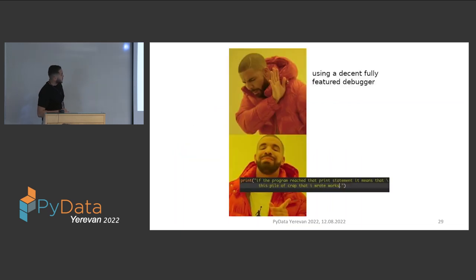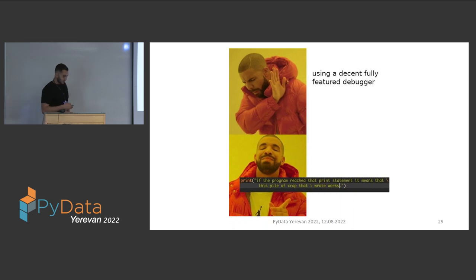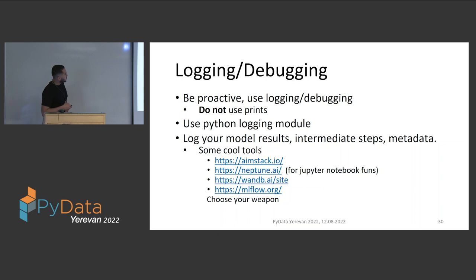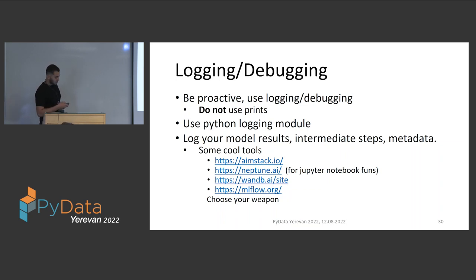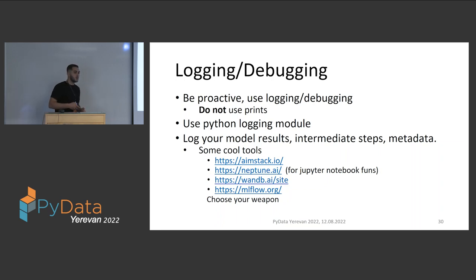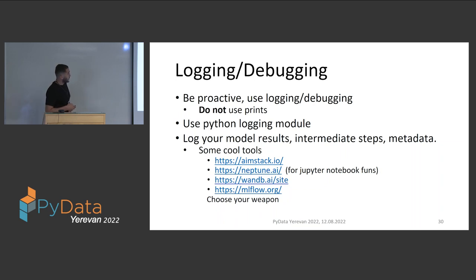About debugging: don't use print messages — use proper tools. Those proper tools include just the Python logging module, which gives you good functionality to log your code. Logging is a proactive tip: when you log your code, after running it you can understand how things went — whether something broke at specific steps or not. You can customize the logging module to your preferences.